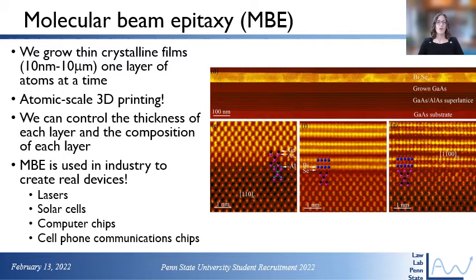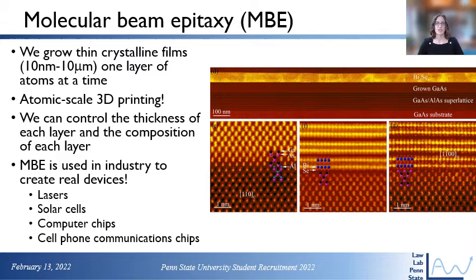Primarily we are a molecular beam epitaxy group, also called MBE. What MBE allows us to do is to grow thin crystalline films approximately 10 nanometers to 10 microns, literally one layer of atoms at a time. You can think of this like atomic scale 3D printing. This allows us to control the thickness and composition of each layer and to have very sharp interfaces between materials in a more complex material stack, as you can see in the transmission electron microscopy images on the right hand side.